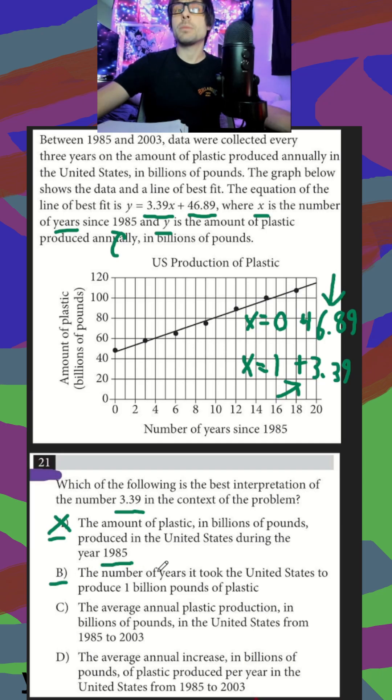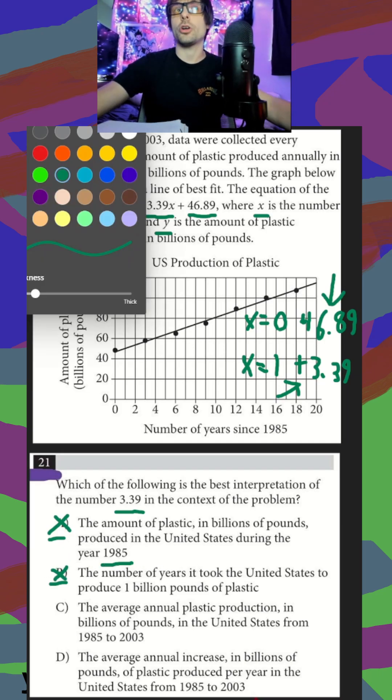In B, the number of years it took, already going to be wrong. That's describing x, not our slope.